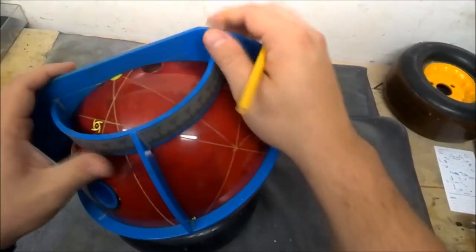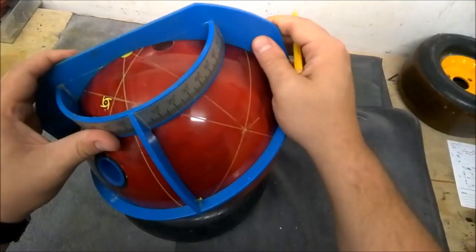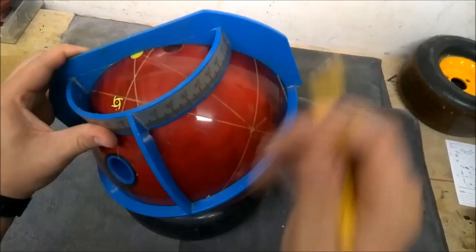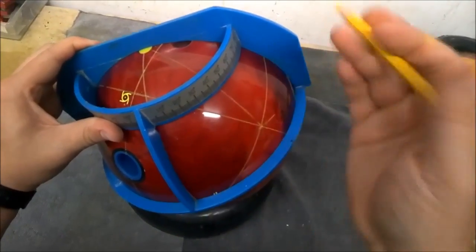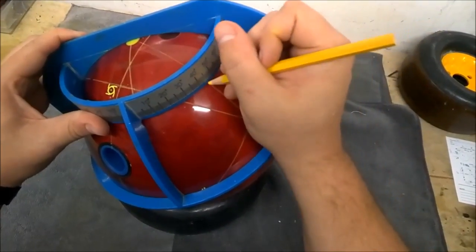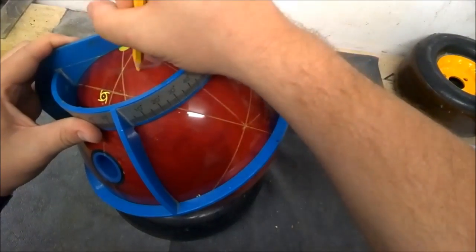Then you want to take your ProSect, put the notch on the pin and line up the rib with the line. Then, we're going to mark that angle which is 45.